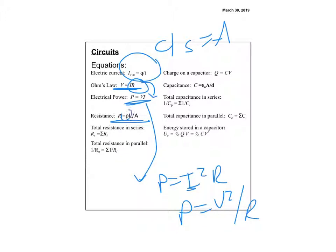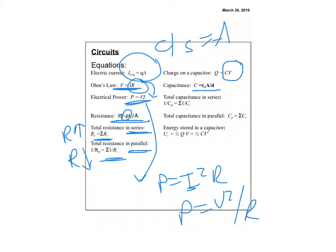Rho (ρ) is the resistivity — what the material is made of. In series, you add resistances (total goes up). In parallel, you use one-over, so resistance goes down. Like opening more doors in a gymnasium — more openings, less resistance. For capacitors: Q = CV. Capacitance equals ε₀A/d — proportional to plate area and inversely proportional to the separation distance.